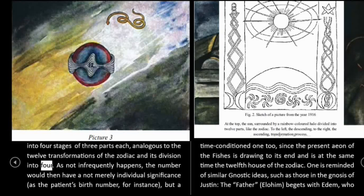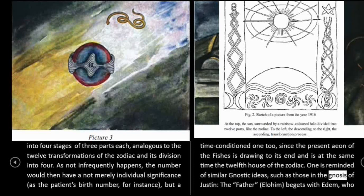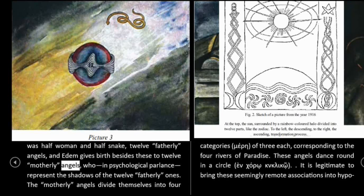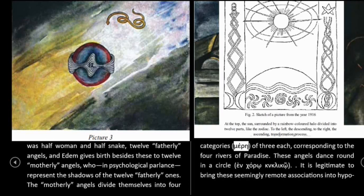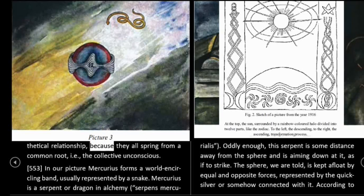As not infrequently happens, the number would then have a not merely individual significance — as the patient's birth number, for instance — but a time-conditioned significance, since the present aeon of the fishes is drawn to its end and is at the same time the 12th house of the zodiac. One is reminded of similar Gnostic ideas, such as those in the Gnosis of Justin — the father, Elohim, begets with Edem, who is half woman and half snake, 12 fatherly angels; and Edem gives birth besides these to 12 motherly angels, who, in psychological parlance, represent the shadows of the 12 fatherly ones. The motherly angels divide themselves into 4 categories of 3 each, corresponding to the 4 rivers of paradise. These angels dance round in a circle. It is legitimate to bring these seemingly remote associations into hypothetical relationship, because they all spring from a common root — i.e., the collective unconscious.